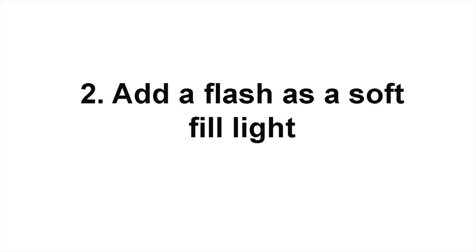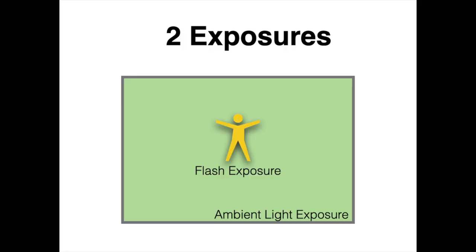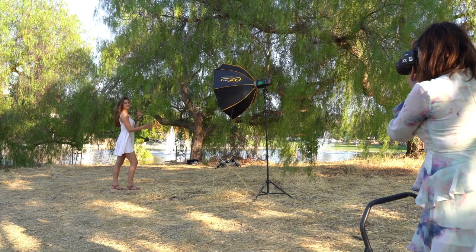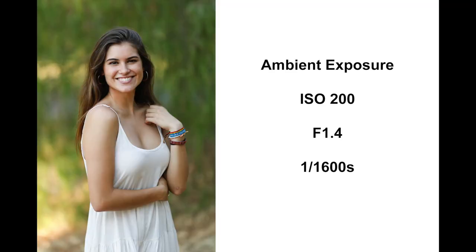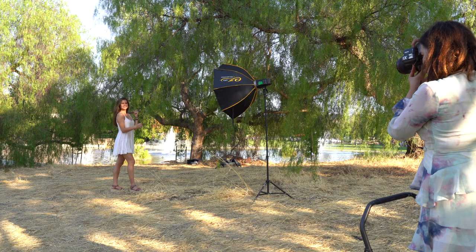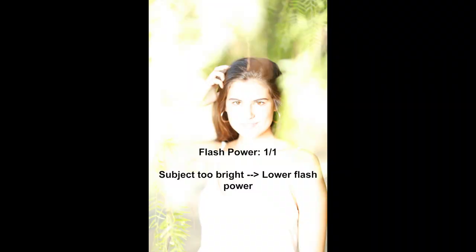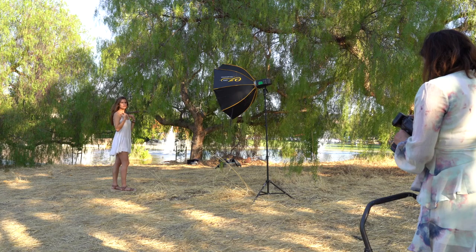I'm adding a flash as a soft fill light. When you add in a flash, you'll have two exposures — the flash exposure, which will affect the subject, and the ambient exposure, which will affect the background. Before turning on the flash, I will first expose for the ambient. I want the brightness in the background to be not too bright and not too dark — so this is my ambient exposure. After getting my desired ambient exposure, I will turn on the flash. Using an off-camera flash is super easy. If the subject is too bright, bring down the power of the flash, and do the opposite if the subject is too dark.